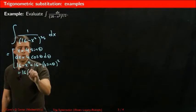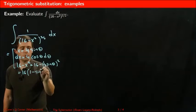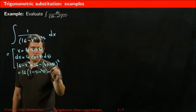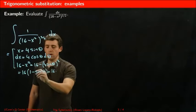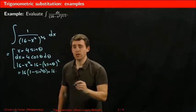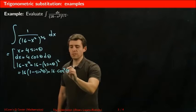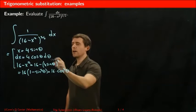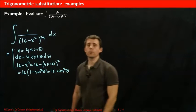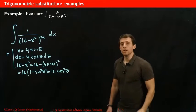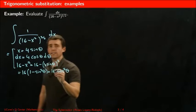1 minus sine squared theta, which is 16 times 1 minus sine squared theta, that's cosine squared theta. Which is the whole point of the substitution because that square will allow me to cancel the square root that appears up there. So we can go ahead and substitute.